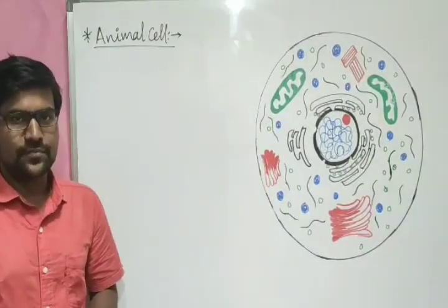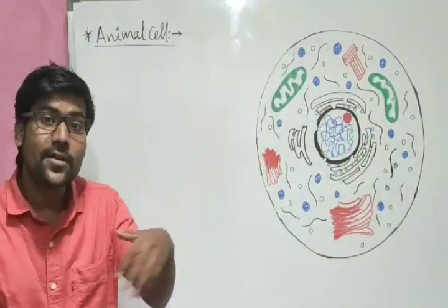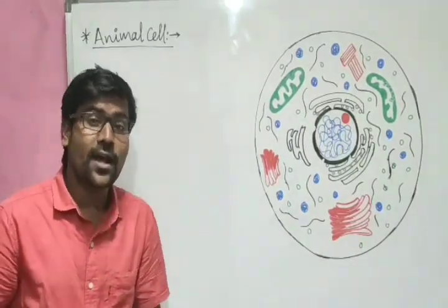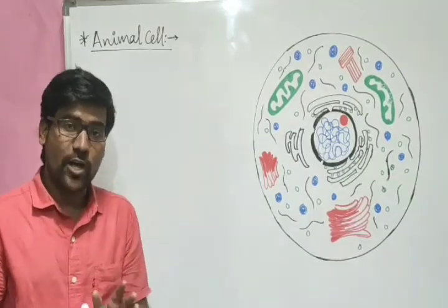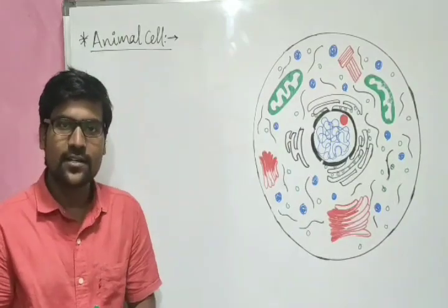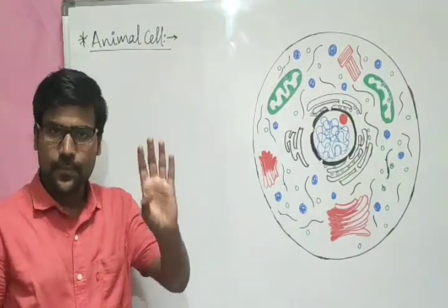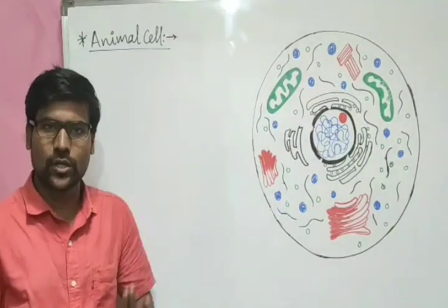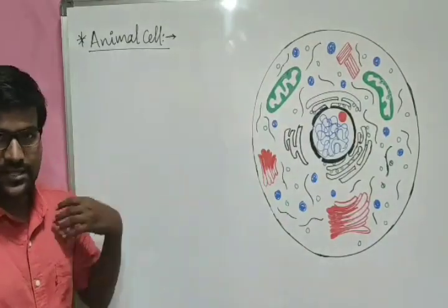The cell I have drawn here is an animal cell — a eukaryotic cell, because it has a nucleus and different membrane-bound cell organelles. We have five kingdoms: Monera, Protista, Mycota (fungi), Plantae, and Animalia. Out of these five kingdoms, the first kingdom — Monera — contains bacteria, and those cells are prokaryotic, meaning they do not have a nucleus. The remaining four kingdoms — Protista, Mycota, Plantae, and Animalia — all have eukaryotic cells with a nucleus.